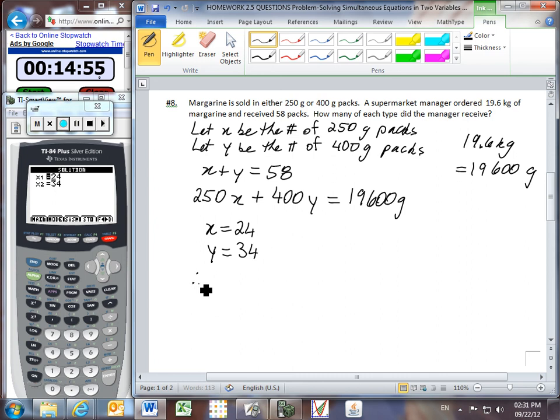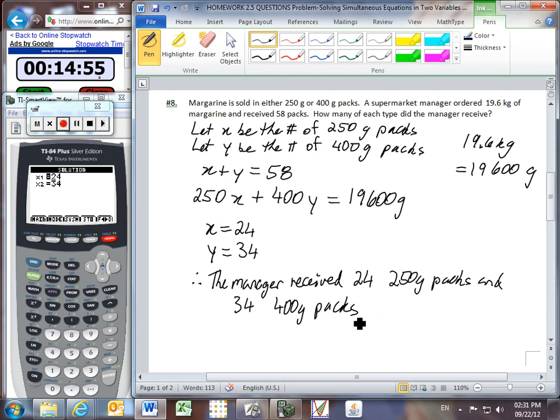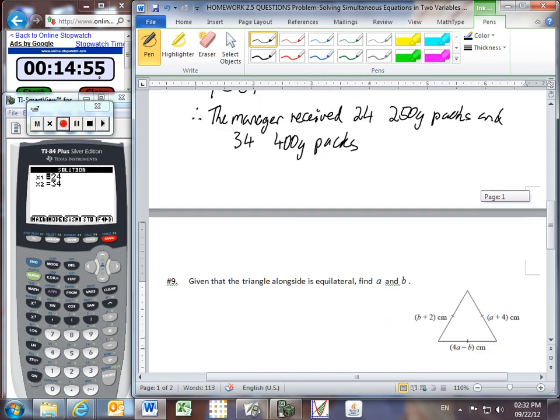So let's write that into a conclusion. Therefore, the manager—and I know that you might think this conclusion is tedious, but remember, if you've been consulted as a mathematical expert, you need to give your answer back in the terms in which it was given to you. So 24, 250 gram packs, and 34, 400 gram packs. Let's go on to question number 9.